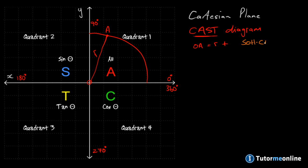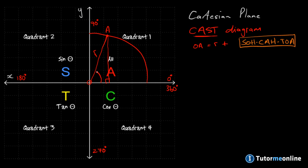Let's write out our SOHCAHTOA mnemonic as a reference for our trigonometric ratios. The line OA that we draw from the origin to point A allows us to join point A to our x-axis so that we have a right-angled triangle. We define angle theta from the positive x-axis to our line OA. We can then define the sides of the triangle in terms of the x and y axes — the opposite side will be the value of y and the adjacent side will be the value of x.